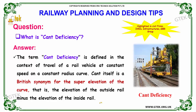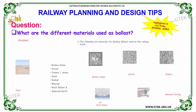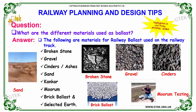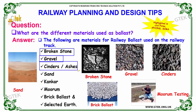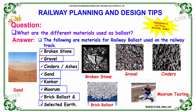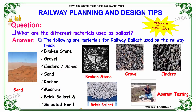The next question: what are the different materials used as ballast? The materials for railway ballast used on the railway track are: broken stone, gravel, cinders or ashes, sand, kankar, moorum, brick ballast, and selected earth.